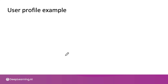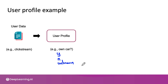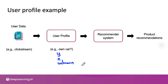Let's look at an example involving user profiles. Maybe you have user data such as clickstream data showing what users are clicking on. This can be used to build a user profile that tries to capture key attributes of a user. For example, user profiles can try to estimate attributes like whether or not the user seems to own a car, because this would help decide if it's worth trying to offer car insurance to that user. Whether the user owns a car could be yes, no, or unknown. This type of user profile, which can have a very long list of predicted attributes, can then be fed to a recommender system — another learning algorithm — that takes this understanding of the user to try to generate product recommendations.